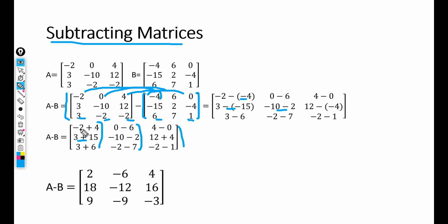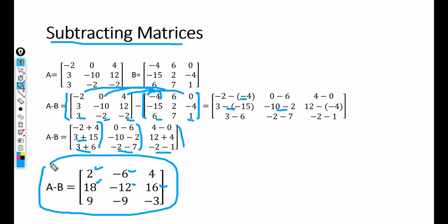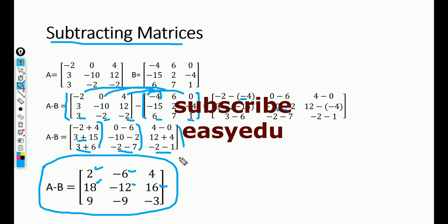Computing all elements: minus 2 plus 4 gives 2, 0 minus 6 gives minus 6, 4 minus 0 gives 4, 3 plus 15 gives 18, minus 10 plus 2 gives minus 8, 12 plus 4 gives 16, 3 minus 6 gives minus 3, minus 2 minus 7 gives minus 9, and minus 2 minus 1 gives minus 3. This is the new matrix from subtracting matrix B from matrix A. This is how we can add and subtract matrices. Thank you for watching and do not forget to subscribe for more videos.